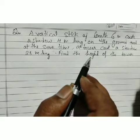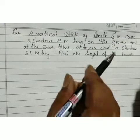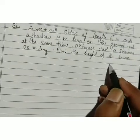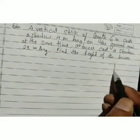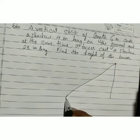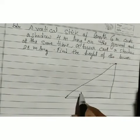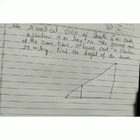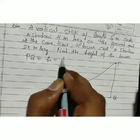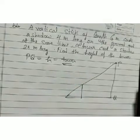We solve this using similar triangles. First we draw a figure. Let PQ represent the tower (height = H meters) and QR = 28 m be its shadow. Let ST be the vertical stick and TR = 4 m be its shadow.